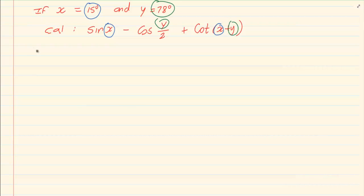So we end up with sin 15 degrees minus cos, we have y is 78 degrees over 2 plus cot open brackets 15 degrees plus 78 degrees.